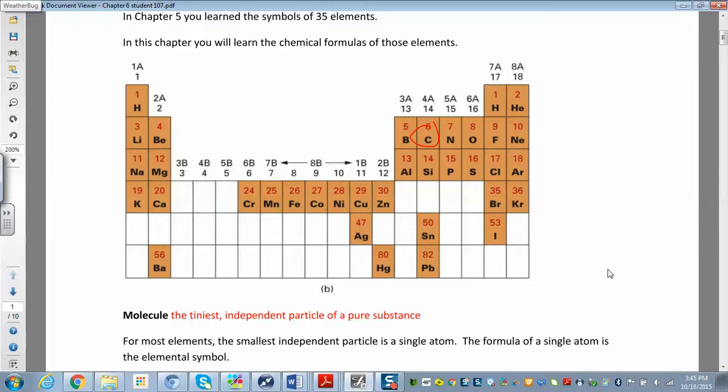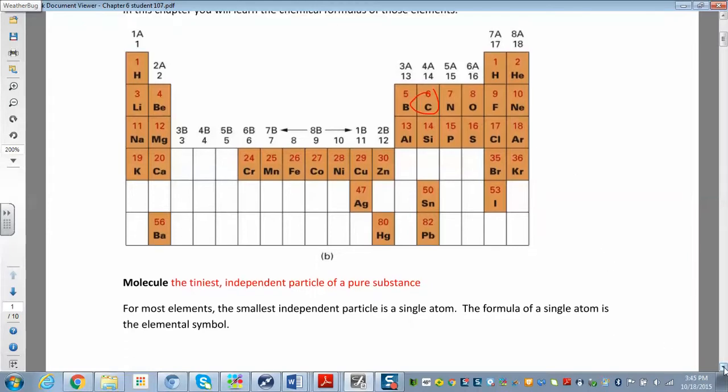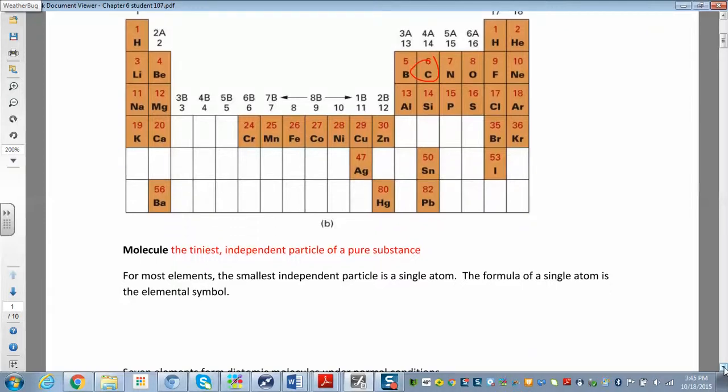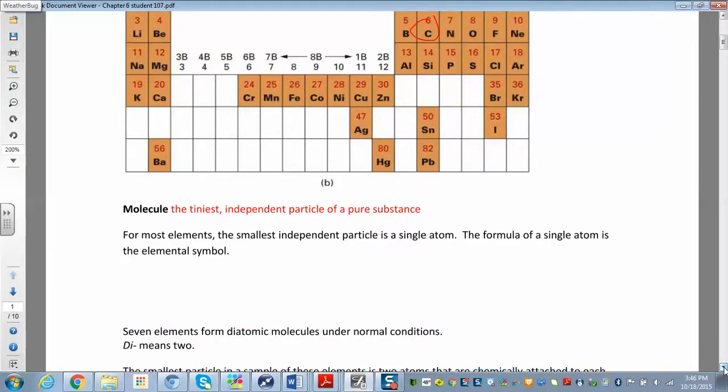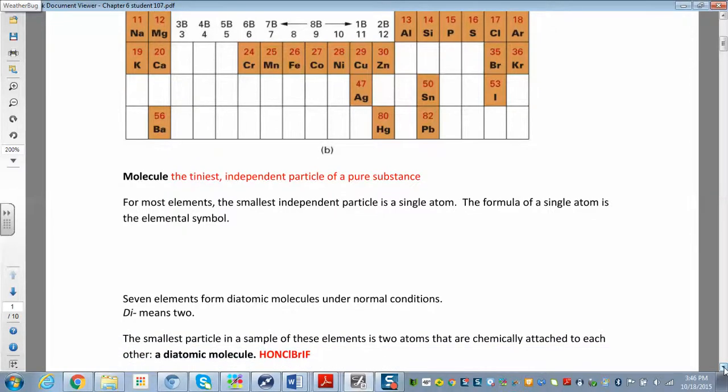So you're going to need to know these names in order to name the whole compound. We're going to put all these elements together, and then we'll get a compound or a molecule. A molecule is the tiniest independent particle of a pure substance. For most elements, the smallest independent particle is just a single atom. Something like helium—the symbol for helium is just HE. So the formula of a single atom is the elemental symbol. Something like lithium is just lithium.